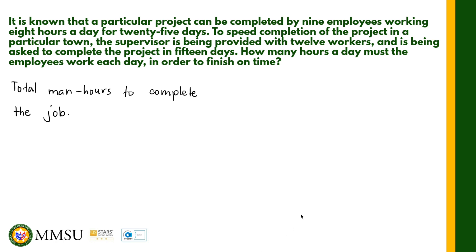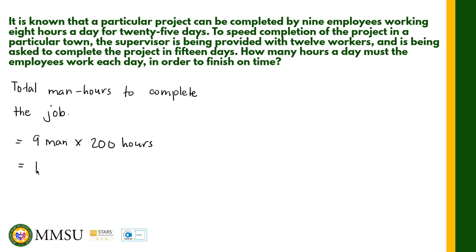We have 9 employees working 8 hours a day for 25 days. The total number of hours is 8 times 25, which is 200 hours. Multiplying by 9 employees gives us 9 × 200 = 1,800 man-hours. So the total man-hours required to complete the job is 1,800 man-hours.